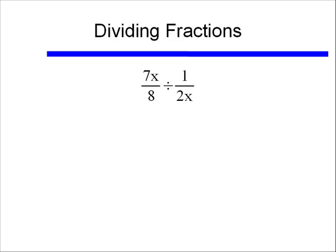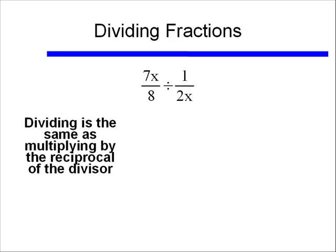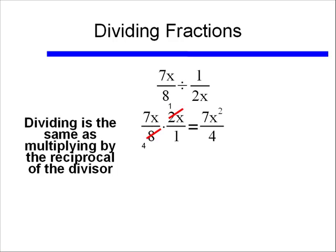To divide fractions, we multiply by the reciprocal of the divisor. So here I have 7x divided by 8, divided by 1 over 2x, and I rewrite that as 7x over 8 times 2x over 1. Again I can pre-simplify — I can get rid of a factor of 2 in my numerator and denominator — then multiply across, and I end up with 7x squared divided by 4.